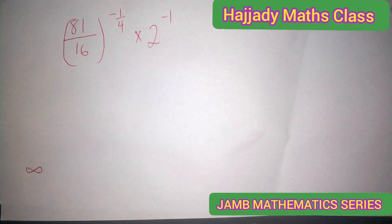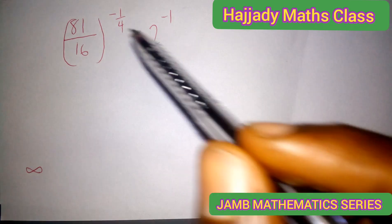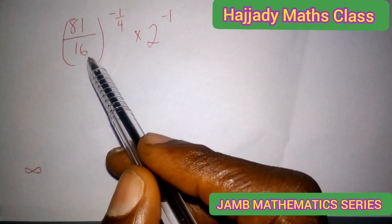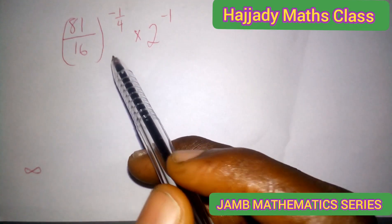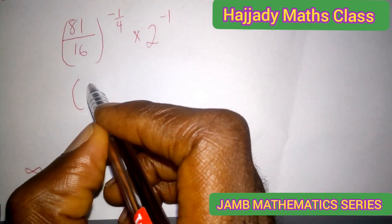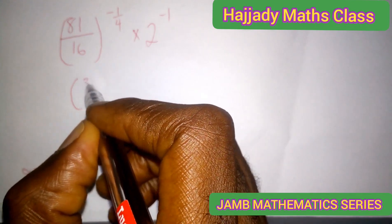This is an indices question and in solving this, we have to express 81 in the power of 4 and also express 16 in the power of 4. And this can be done by saying 81 is the same thing as 3 raised to the power of 4.